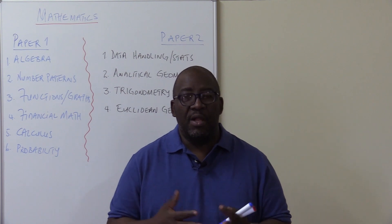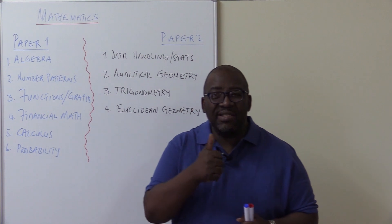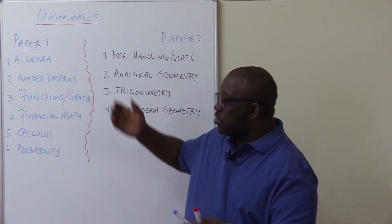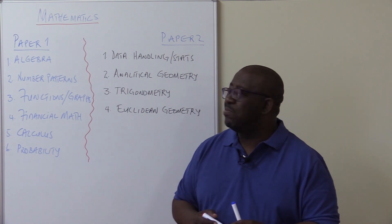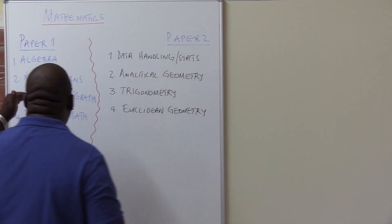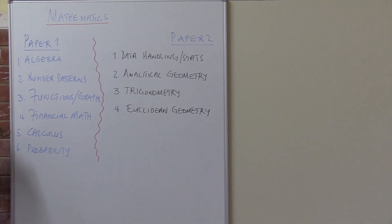How is the paper looking like? Your paper 1 is made out of only six topics. You can't fail to master only six topics. The first topic at the end of this year's exams will be your algebra. After your algebra, your number patterns, after patterns, your functions or graphs, there are about five graphs, financial math, calculus, as well as probability. That's how your paper 1 will look like.